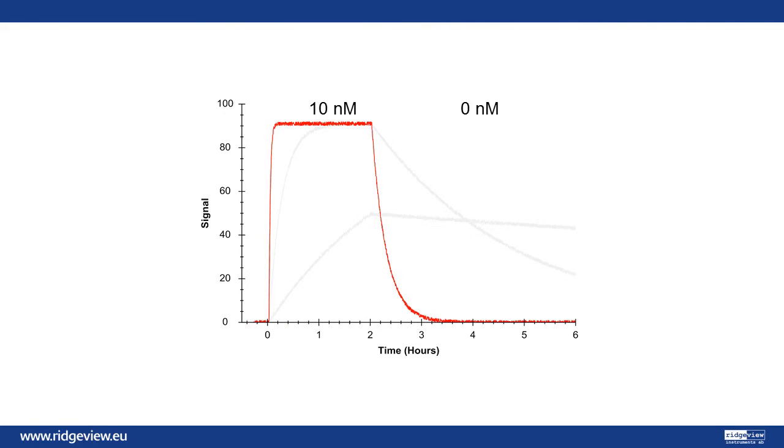The red curve is an example of a fast-on, fast-off interaction, which quickly reaches equilibrium but also dissociates rapidly when the ligand solution is removed. In contrast, the slow-on-slow-off interaction represented by the blue curve will need long incubation time to reach equilibrium, but will then remain for a long time.